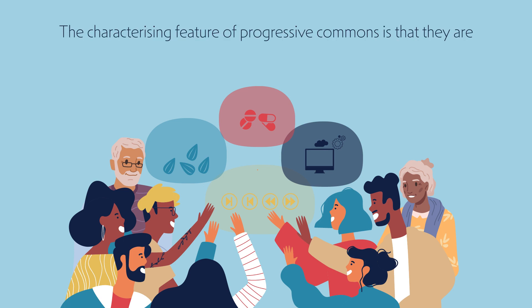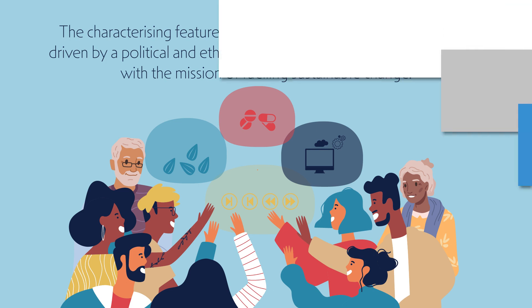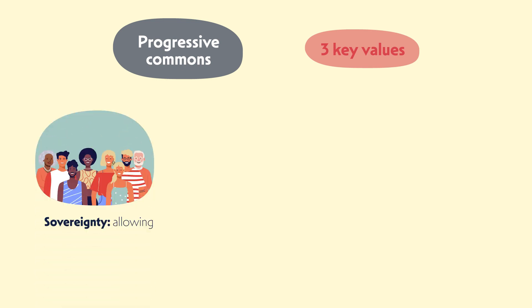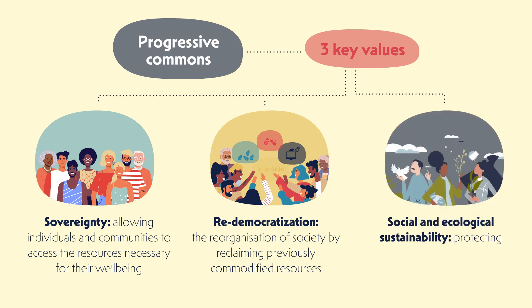The characterizing feature of progressive commons is that they are driven by a political and ethical protest against enclosures of property, with the mission of fueling sustainable change. Ultimately, they are guided by three key values: sovereignty, or allowing individuals and communities to access the resources necessary for their well-being; redemocratization, or the reorganization of society by reclaiming previously commodified resources; and social and ecological sustainability, which entails protecting natural environments and promoting long-term welfare and stability.